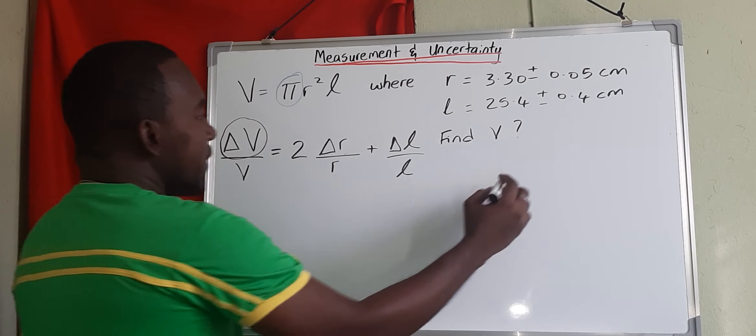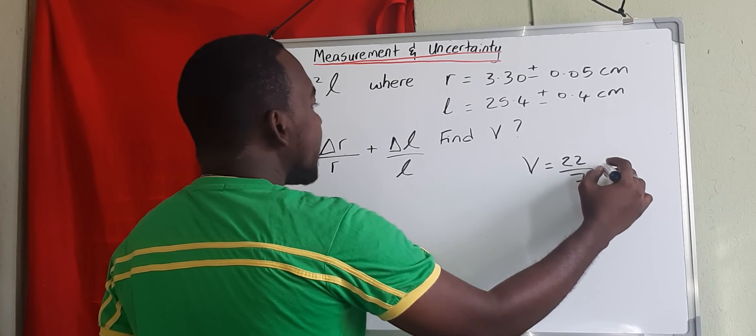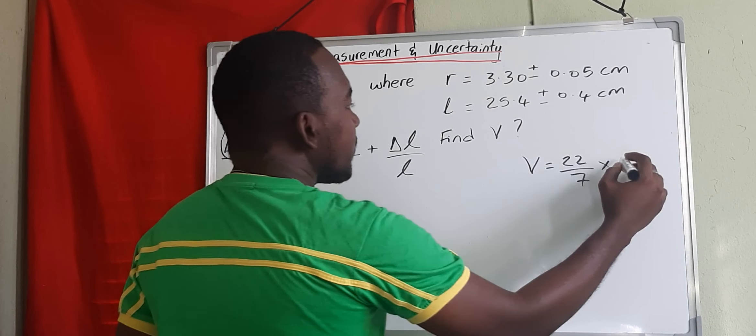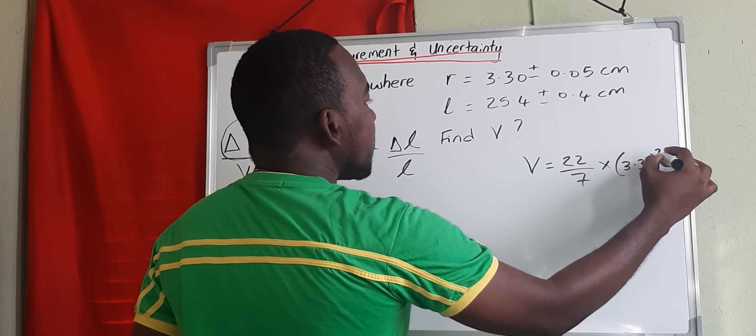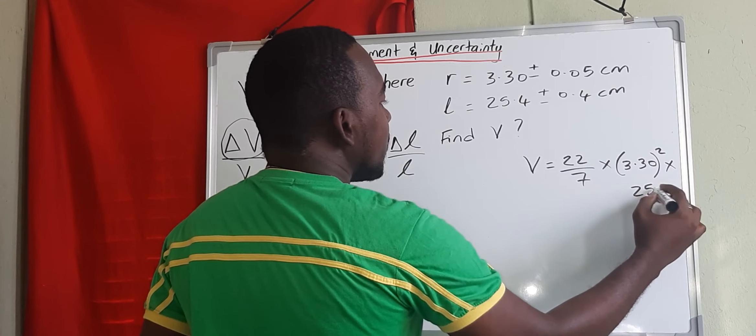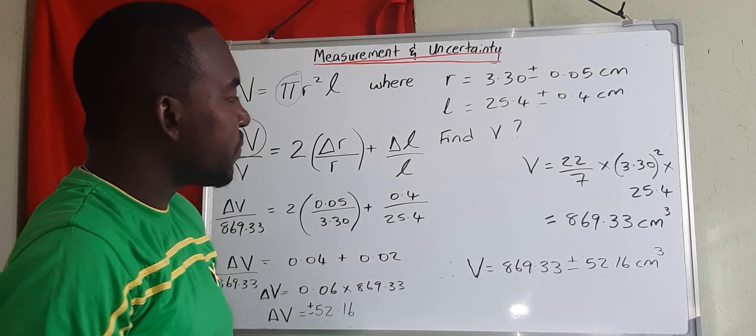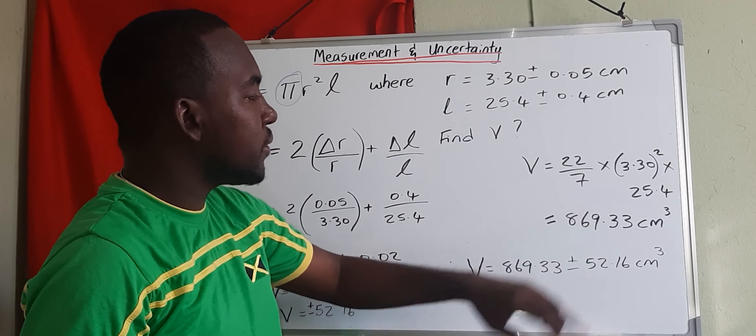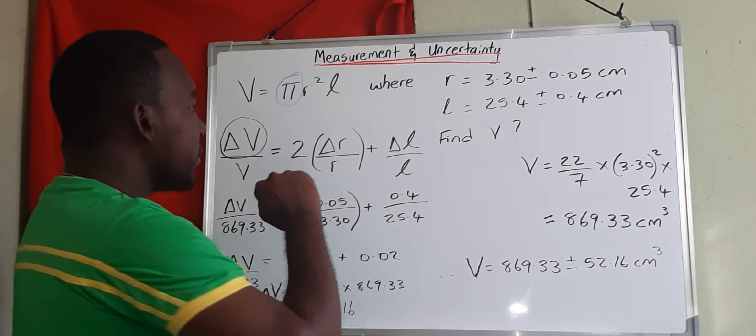To find the value of v, we substitute, so it's 22 over 7 for pi, and r is 3.30. We square that and we multiply by the length, which is 25.4. And we get our volume here is 869.33 centimeter cubed. So now that we have volume, we can substitute our value in our equation.